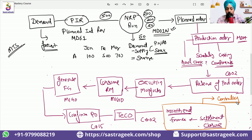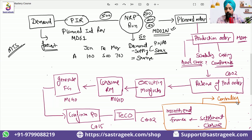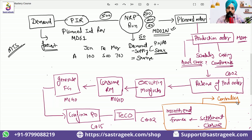Generally we prefer that before releasing the production order, the components should be available. But there can be some business processes that release the production order two to three days in advance, allowing their people to check stocks and ensure stock comes from the store. So even without stock on hand or a reservation created, the release can still be done. These are points you need to note and figure out what configuration is needed.